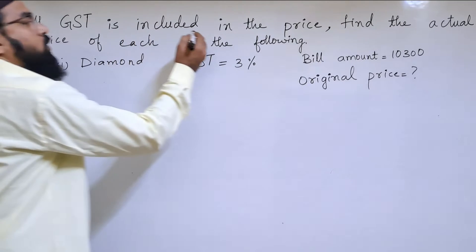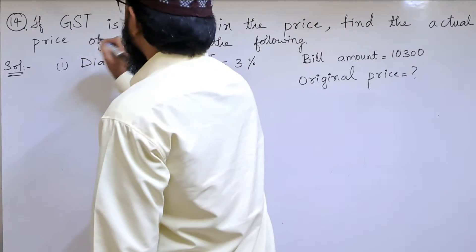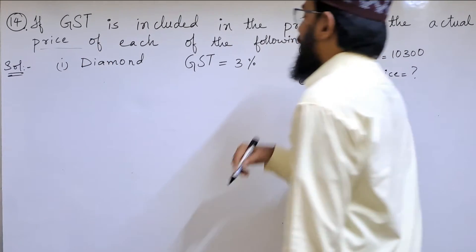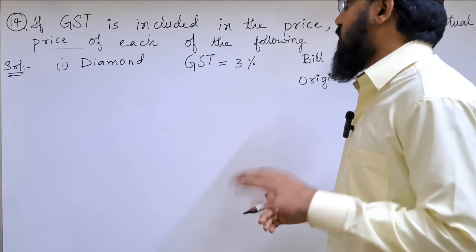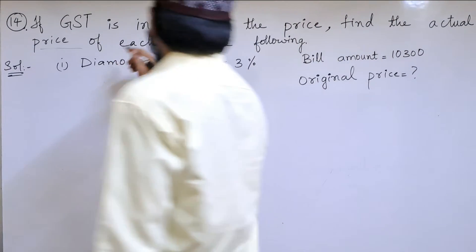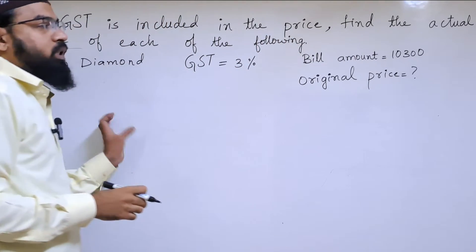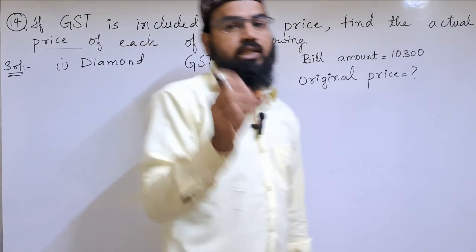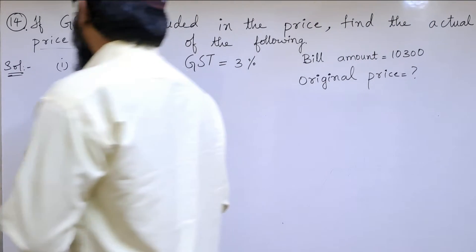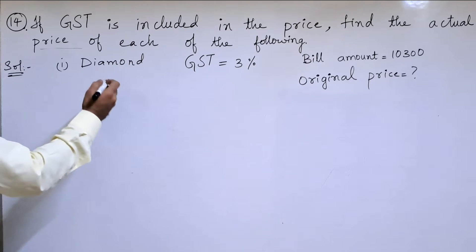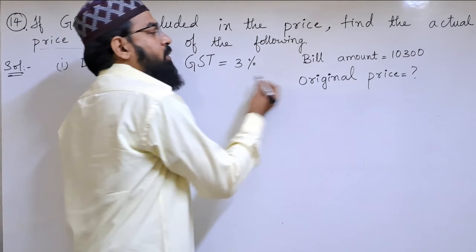This is a price problem: if GST is included in the price, find the actual price. There are three items, and for each item there is a GST given. We need to find out the original price. Let us start with the diamond — GST is given as 3% and the bill amount is ₹10,300.